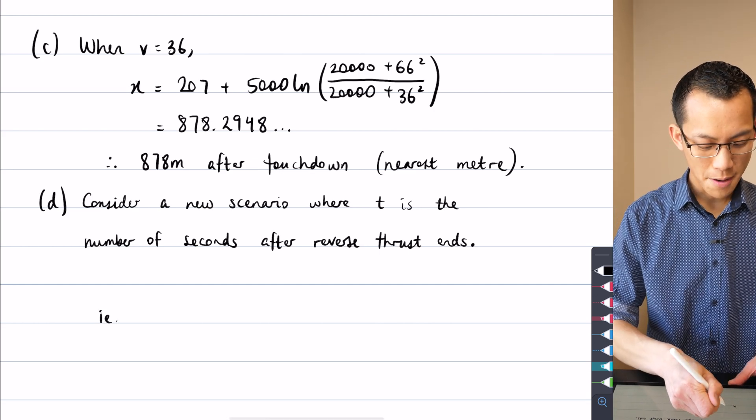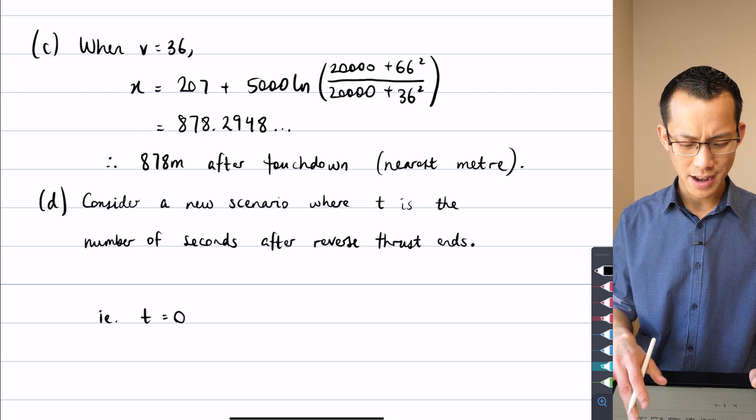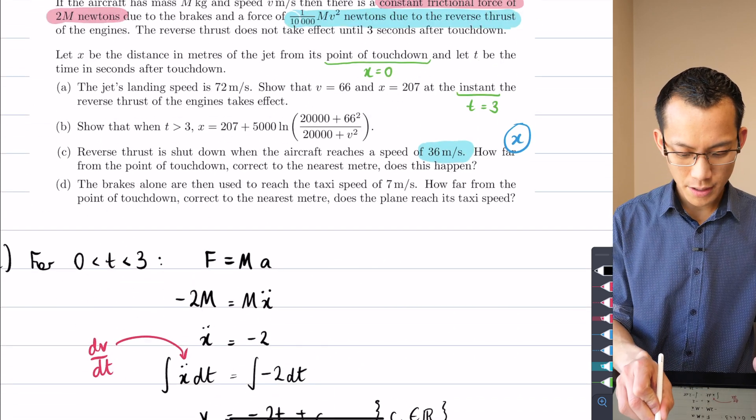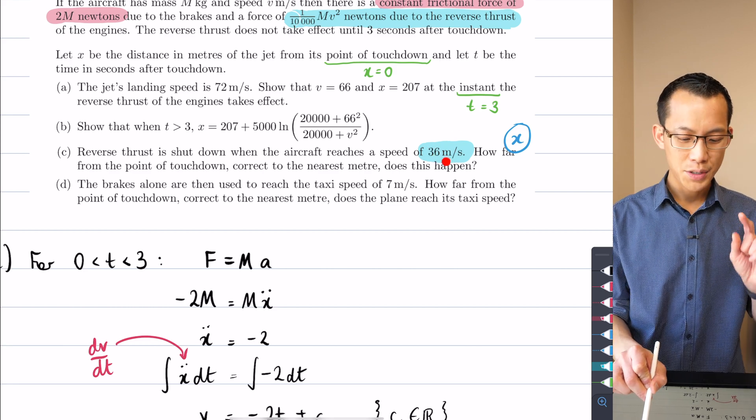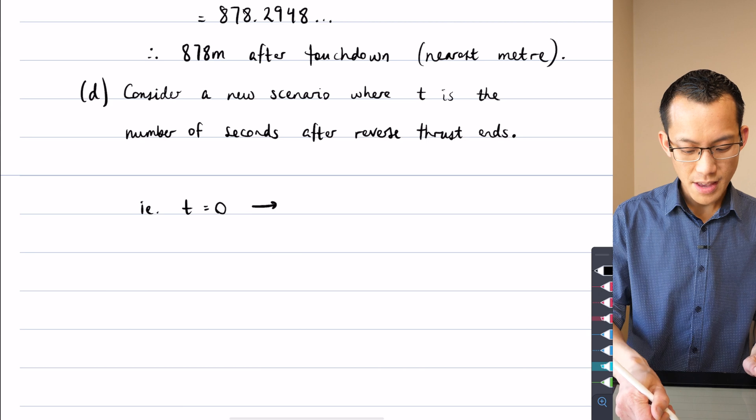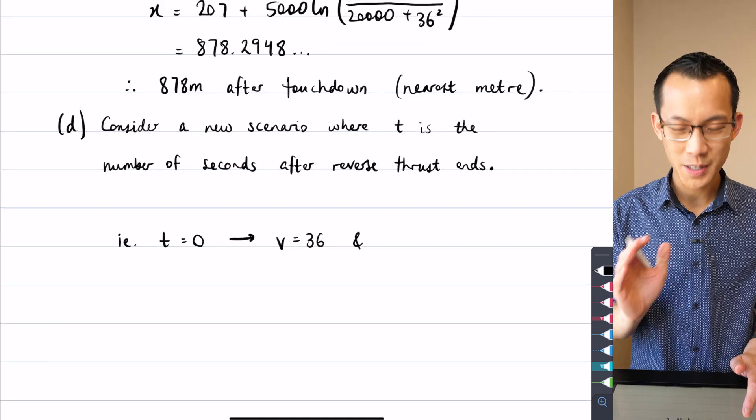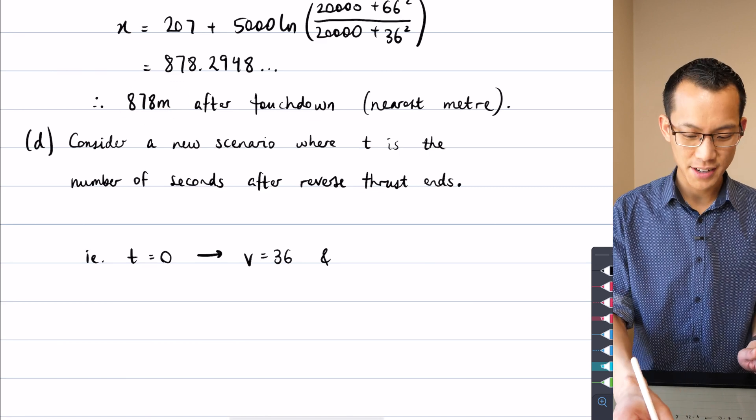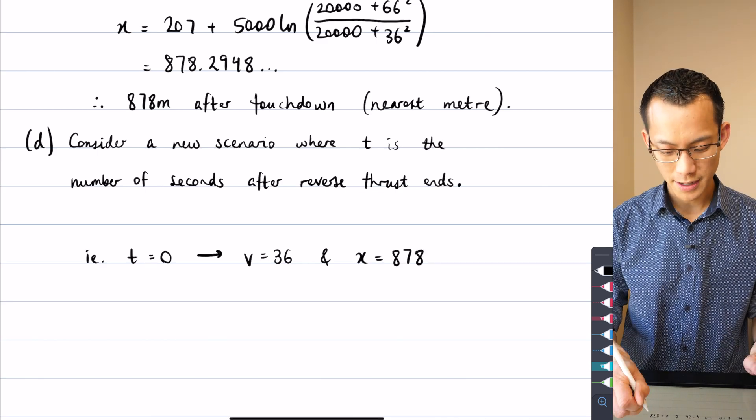We went from touchdown, and then the brakes were going, and then we went to reverse thrust, which was part B, and then that was going for some amount of time. And then it says, the brakes alone are then used. So reverse thrust is finished, and I just use the brakes to get down to this speed. So then I'm going to explain this as a number of seconds after reverse thrust ends. Okay. So now that I have defined this, right, I can then say, in other words, my new time equals zero. When is that? And the answer is, well, when did reverse thrust stopped? And the answer is, if you have a look back at the question, reverse thrust is shut down when the aircraft reaches a speed of 36.